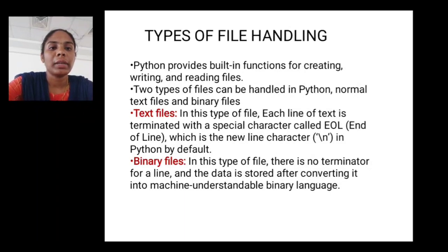Types of file handling. Python provides built-in functions for creating, writing and reading files. Two types of files can be handled in Python: normal text files and binary files. Text files. In this type of file, each line of text is terminated with a special character called end of line, which is the new line character in Python by default. Binary files. In this type of file, there is no terminator for a line and the data is stored after converting it into machine understandable binary language.